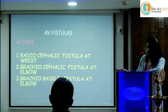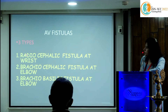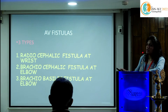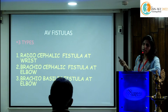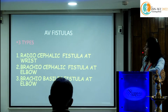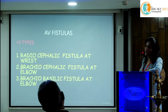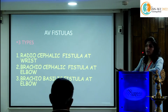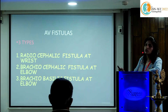As you all know, there are three types of fistula. The first and most preferred is a radiocephalic fistula at the wrist — because even if this fails, we have the other side open. If this is not possible, a brachiocephalic fistula at the elbow is the second option.